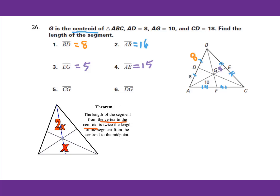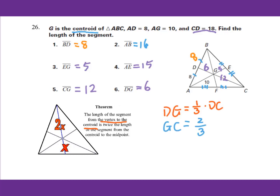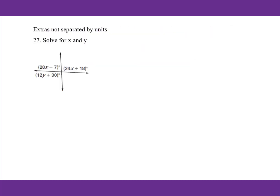For CG, we know CD equals 18. Using the centroid theorem: DG equals one-third of DC, so DG equals one-third times 18, which equals 6. GC equals two-thirds of DC, so GC equals two-thirds times 18, which equals 12. Therefore, CG equals 12 and DG equals 6.